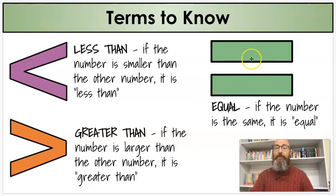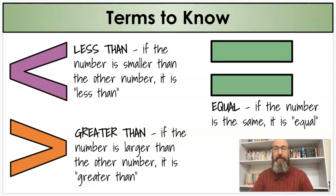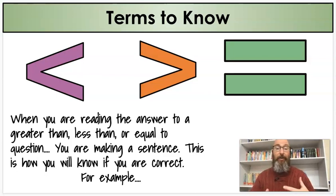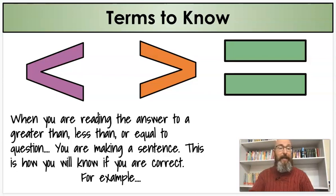And last one — and you know this one already — it's equal, or equal to. And if the number is the same, it is equal, or equal to the other number. Now, why do I need to know those things? Well, when you're reading the answer to a greater than, less than, or equal to question, you're making a sentence. And this is how you know if you're correct — if the sentence is true.